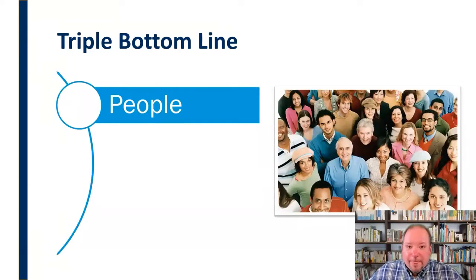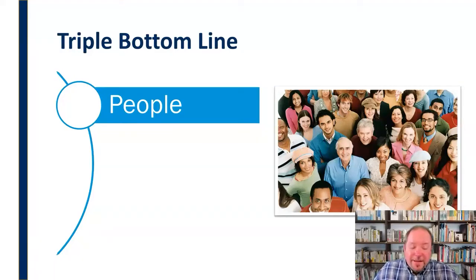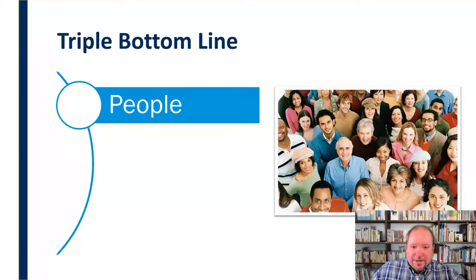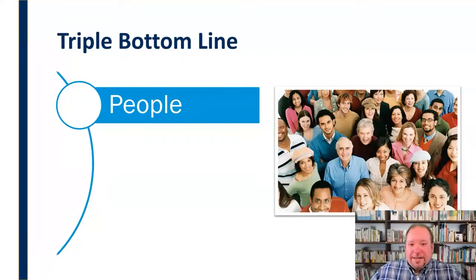The first is people. As organizations, we exist to serve our publics — either you're there to sell something to people, or you're there to serve people in a more service-oriented way if you're a nonprofit. But no organization exists or has any kind of function without people at its core. We need to be concerned with who the people involved in our organization are, who is being served, and how that impacts the efficiency, effectiveness, and overall profitability of the organization.